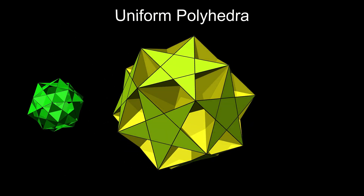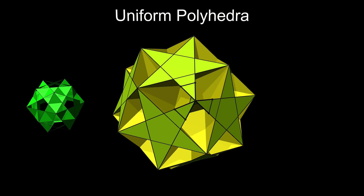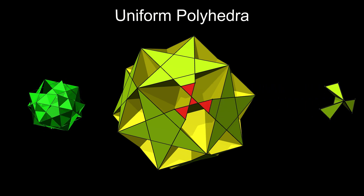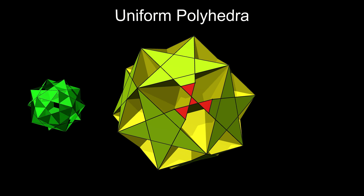The 'ditrigonal' in these names refers to their vertex figures, which in each case is a hexagon with two different side lengths alternating.